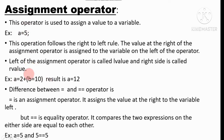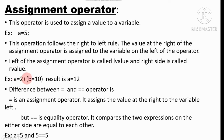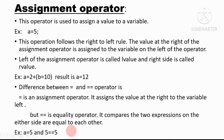For example: a = 2 + (b = 10). Here another assignment operator is used on the right-hand side. The value 10 is assigned to the variable b, so b equals 10. Then 10 plus 2 equals 12, therefore a equals 12.